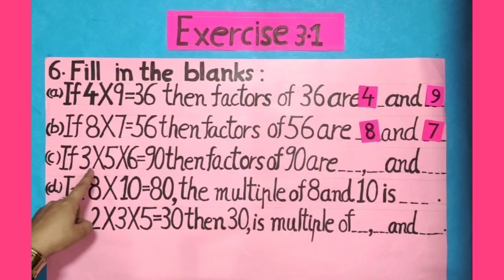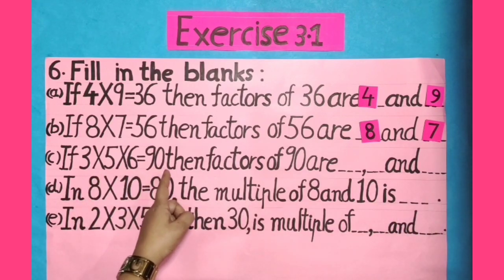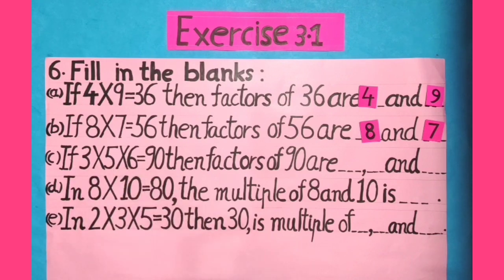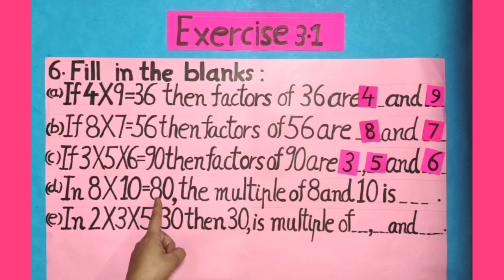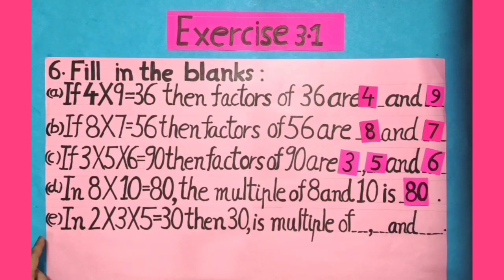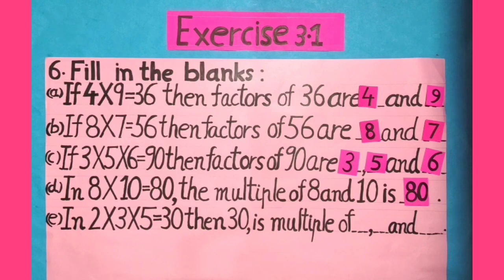Now part C: if 3 × 5 × 6 = 90, then factors of 90 are ___, ___ and ___. Since 3 × 5 × 6 = 90, that means 3, 5 and 6 are factors of 90. So we will write: 3, 5 and 6. Now part D: in 8 × 10 = 80, the multiple of 8 and 10 is ___. Since 8 × 10 = 80, that means 80 is the multiple of 8 and 10. So we will write 80 in this blank. Now part E: in 2 × 3 × 5 = 30, then 30 is a multiple of ___, ___ and ___. Dear kids, 30 is a multiple of 2, 3 and 5. So we will fill in the blanks: 2, 3 and 5.